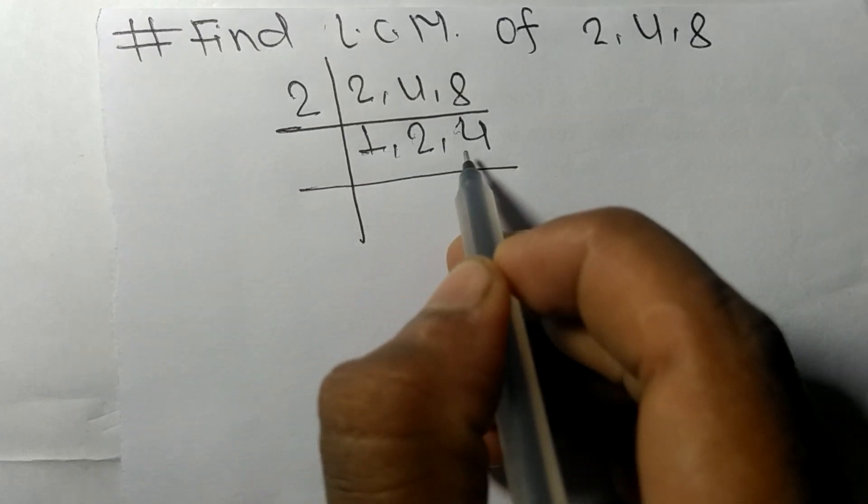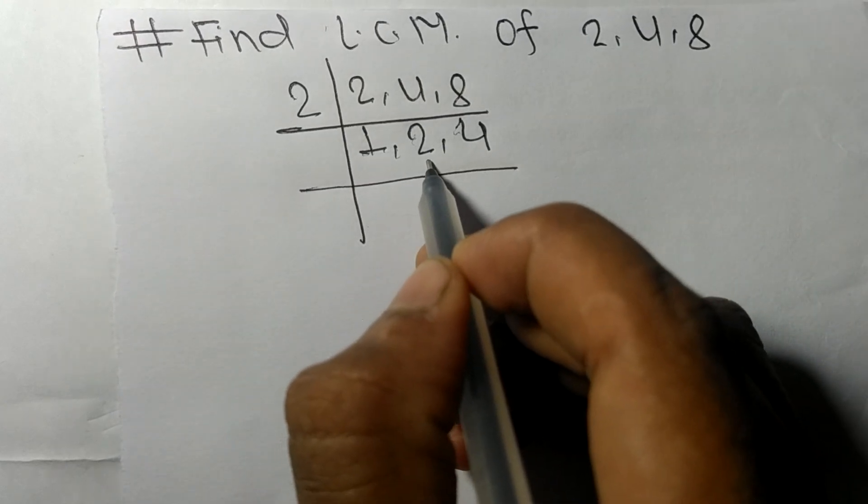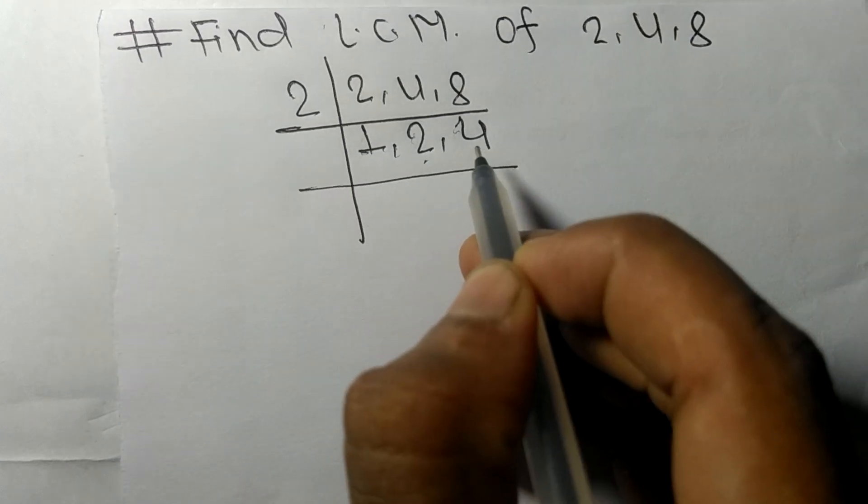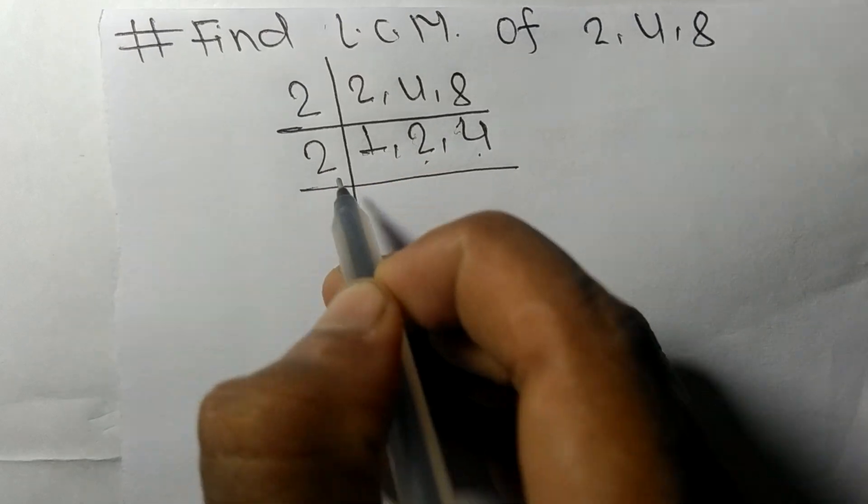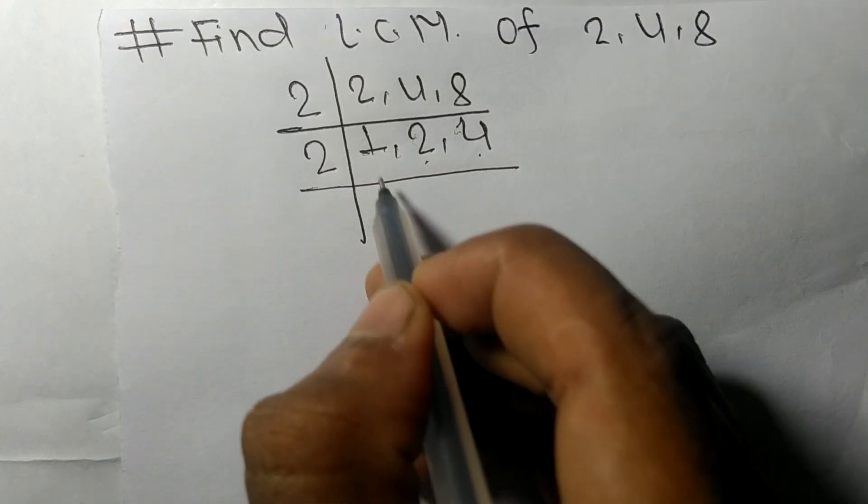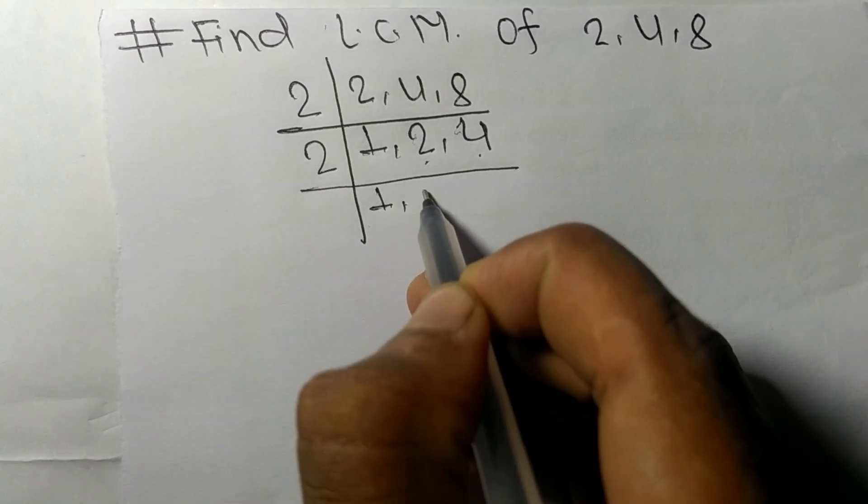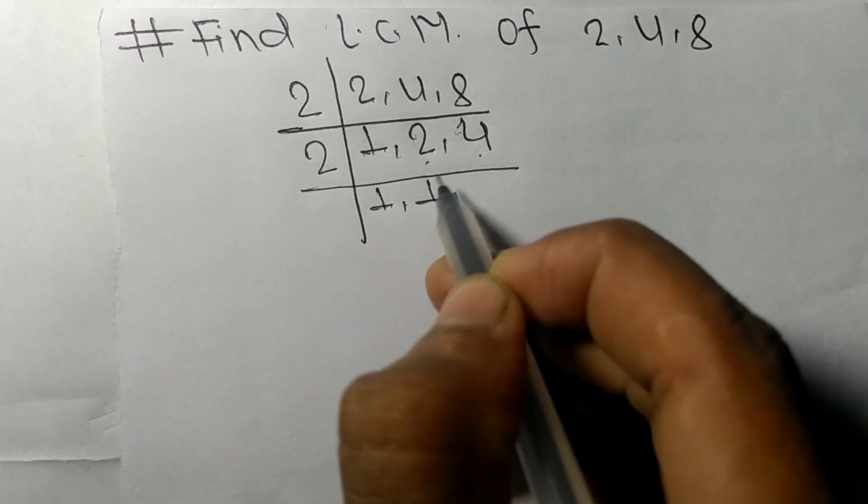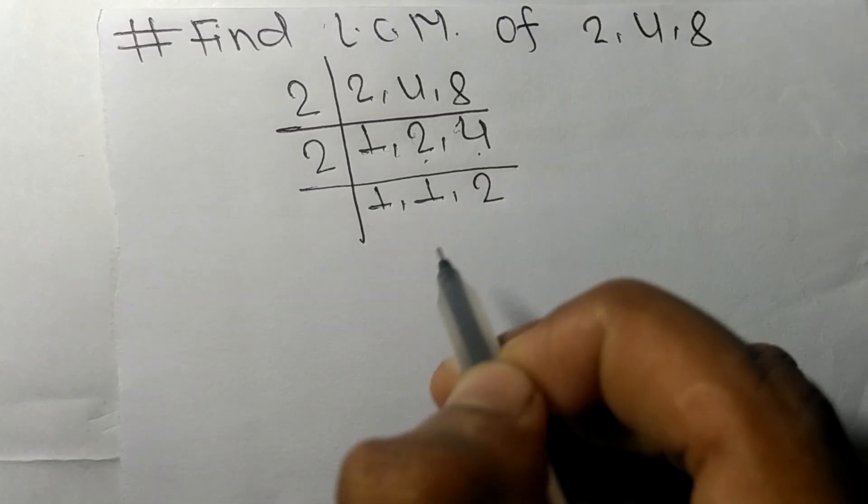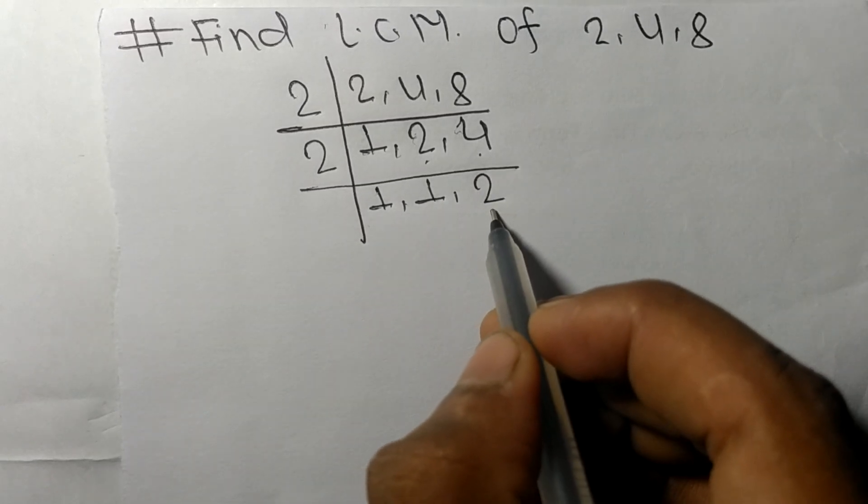Now we got 1, 2, and 4. These two numbers are exactly divisible by 2, so 1 not divisible. So 1 as it is, 2 times 1 means 2, 2 times 2 means 4.